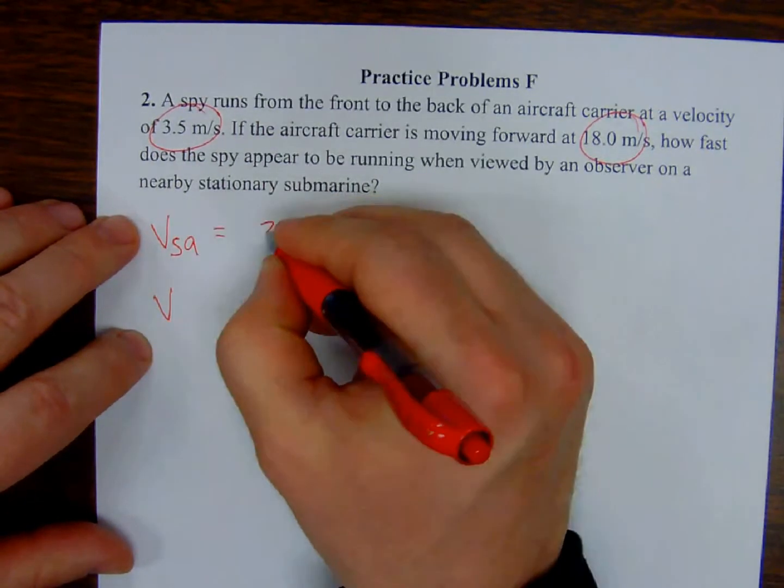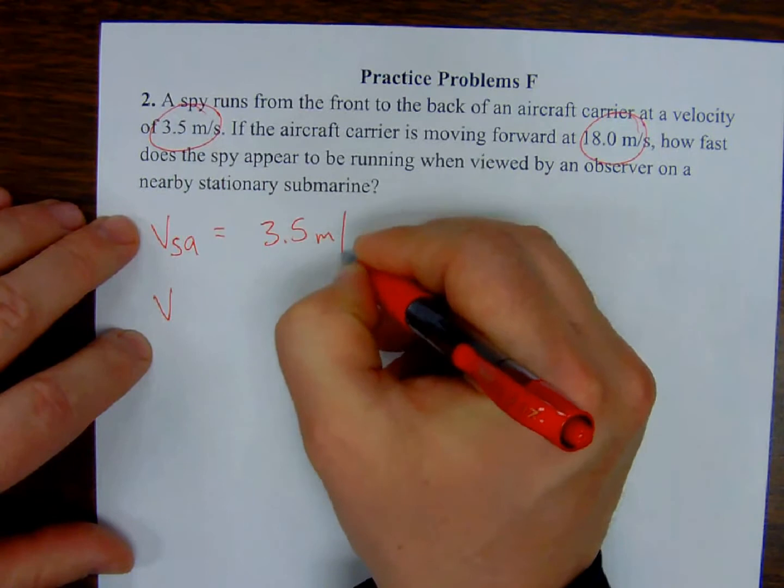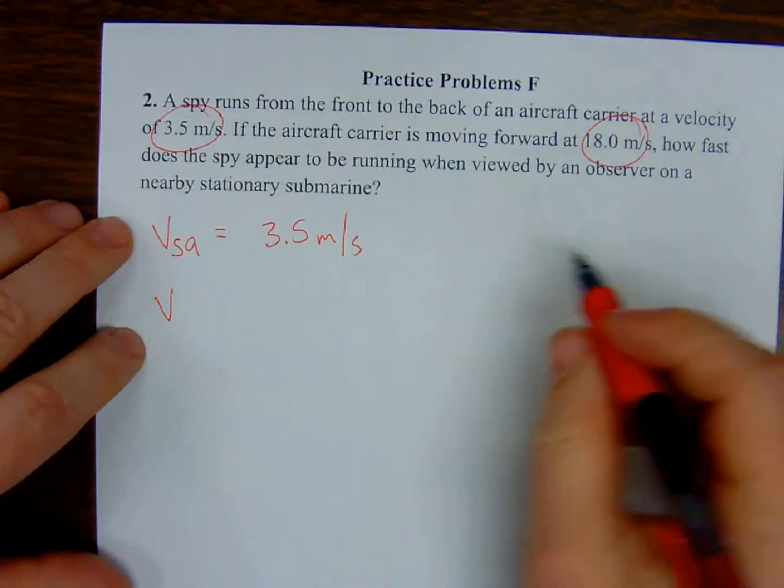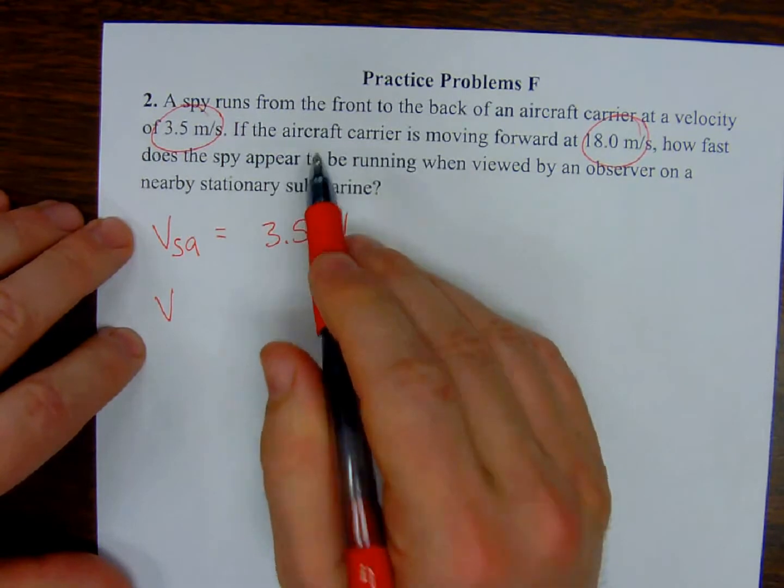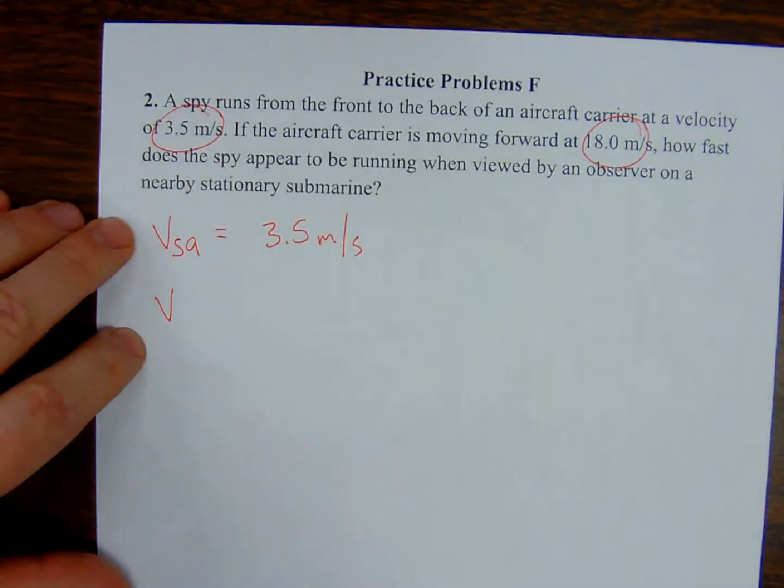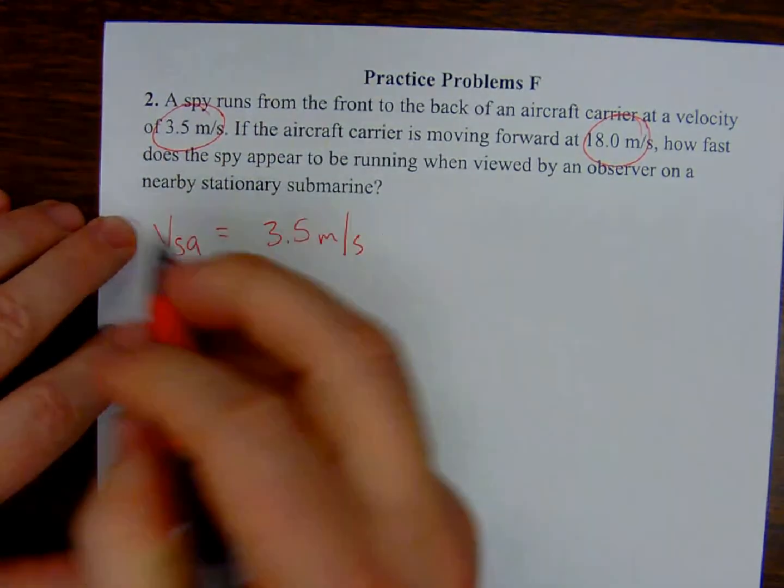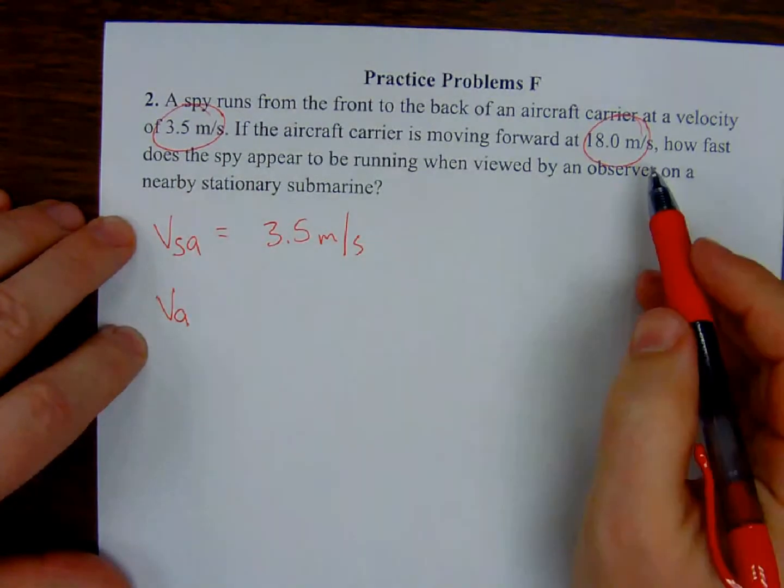We have a second velocity. This is actually the velocity of the aircraft carrier. So I'm going to go sub-a. With respect to what? What's the aircraft carrier on?